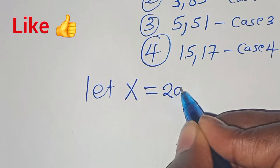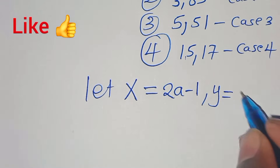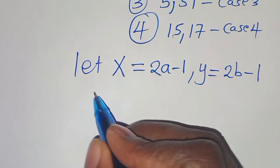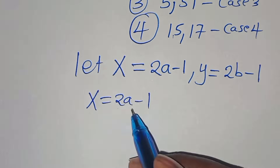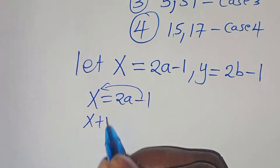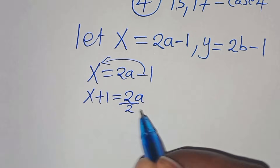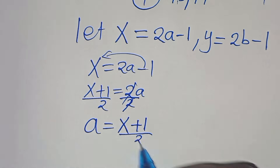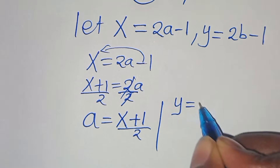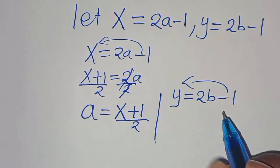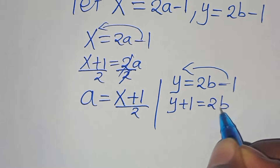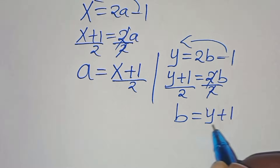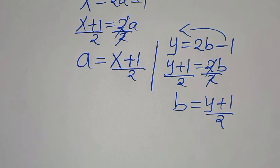We let x equal 2a minus 1 and y equal 2b minus 1. This means a equals (x plus 1) over 2, and b equals (y plus 1) over 2, by rearranging each expression and dividing both sides by 2.